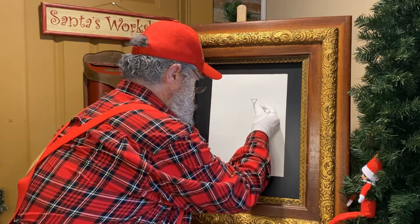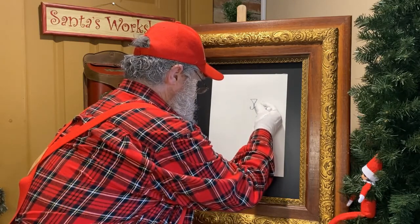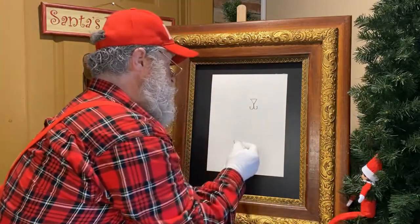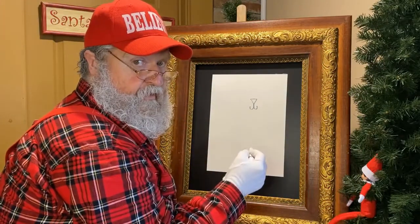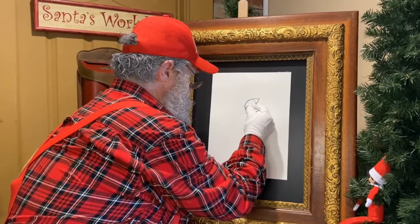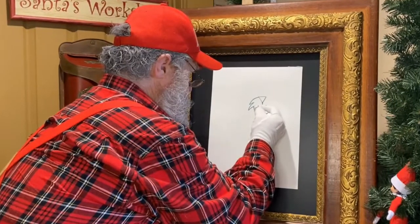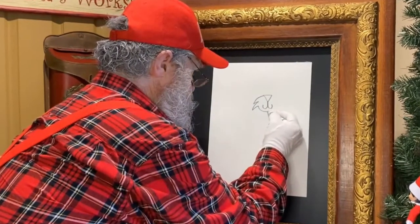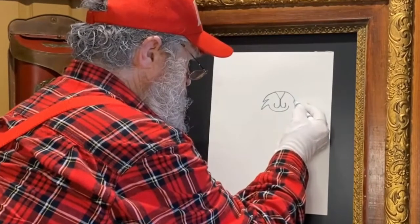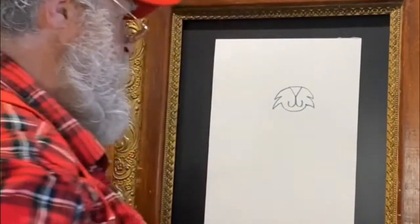Now we need to do a mouth. Can everybody draw a J? C'est la bouche du chat. And we're going to do a backwards J too. The next thing we need to do is put some cheeks on them. We're going to come off the side of the nose like this, out and in and back out, around like that, right underneath his mouth just like that.